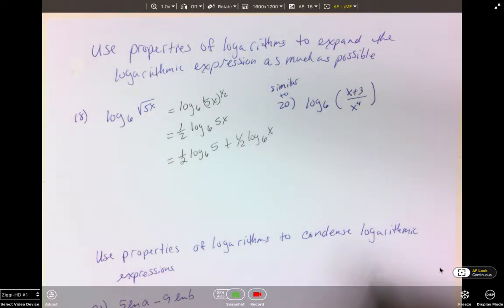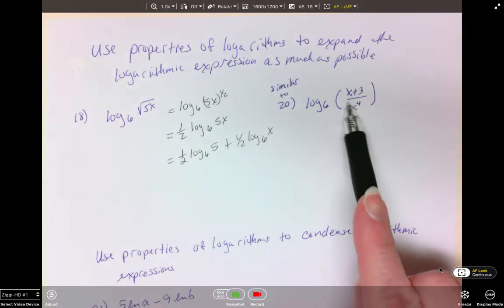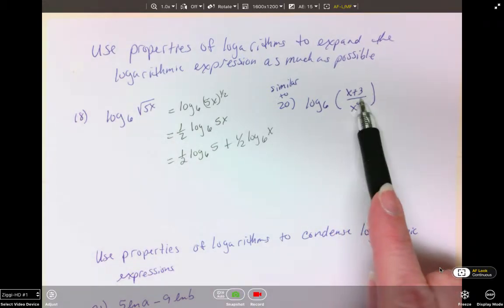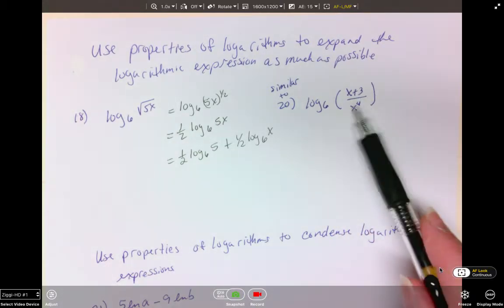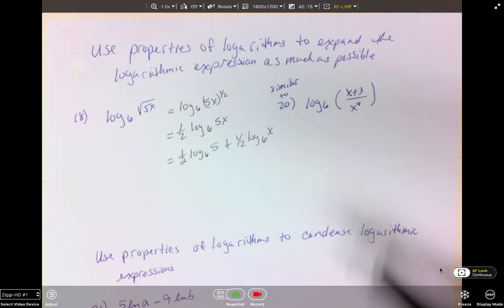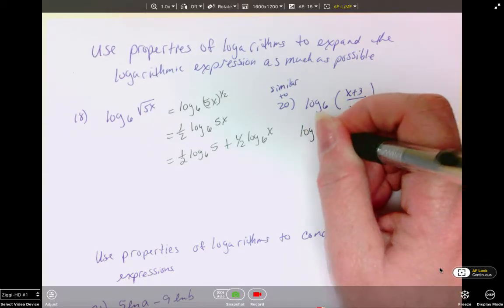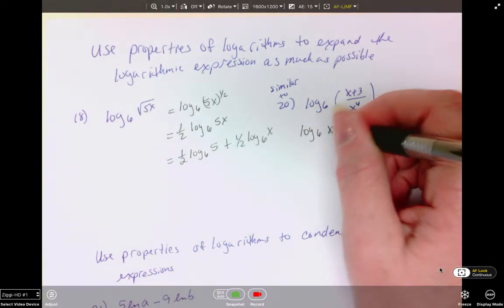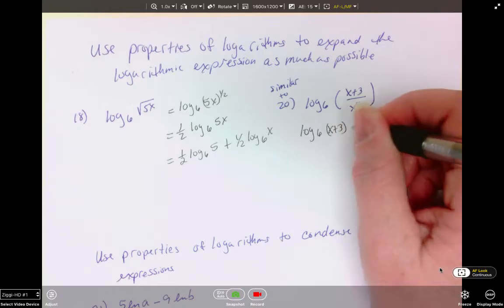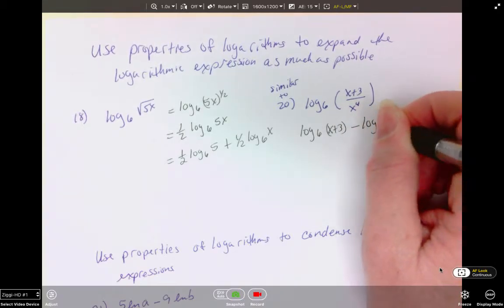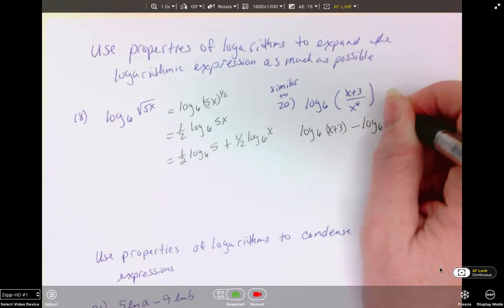So the first thing I want to do is separate them apart. This is division so it's going to become subtraction. You can think about division with this line is like subtraction with a line. So as we rewrite this, we're going to have log base 6 of x plus 3 minus log base 6 of x to the 4th.